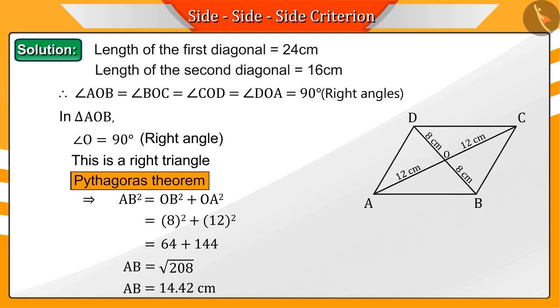Hence, for the rhombus, the length of the sides AB, BC, CD and DA would be 14.42 cm.